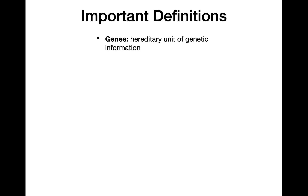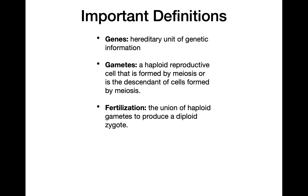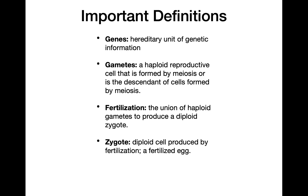A gene is the hereditary unit of genetic information — genes are what's actually passed on from one generation to the next. Gametes are haploid reproductive cells produced by meiosis, or by descendants of cells produced by meiosis. When two haploid gametes come together and fuse, that's fertilization, and it produces a diploid zygote — the diploid cell resulting from fertilization.